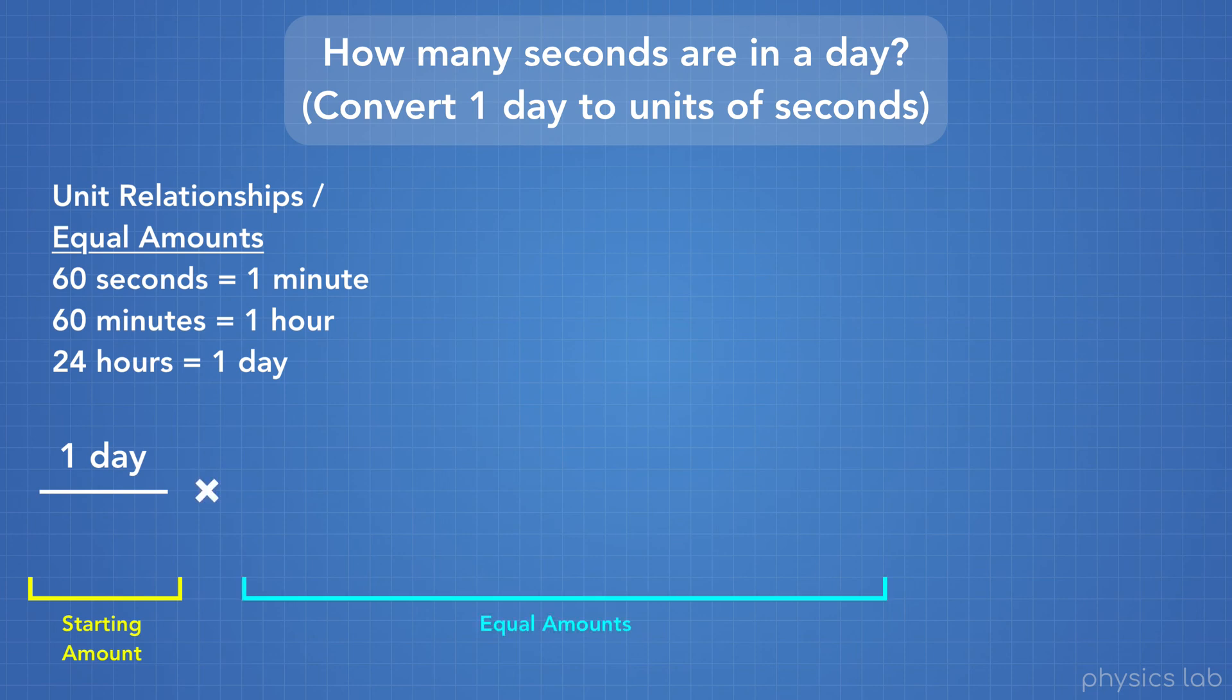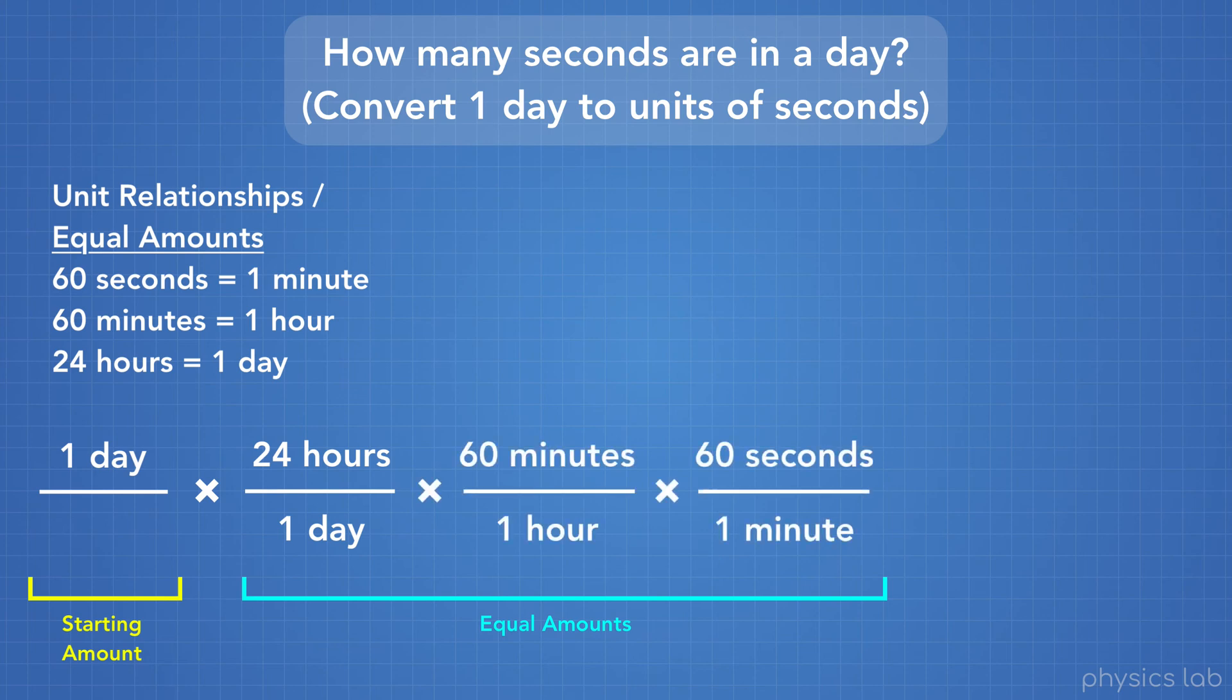Next, we're going to multiply by those unit relationships that we know, which are the amounts of each unit that are equal to each other. We have 24 hours per 1 day, 60 minutes per 1 hour, and 60 seconds per 1 minute.